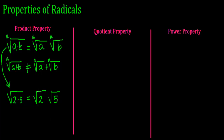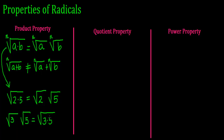This is equivalent. It also allows me to go backwards. If I have the square root of 3 times the square root of 5,